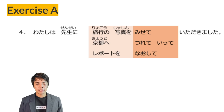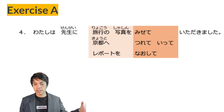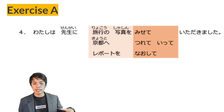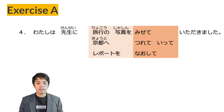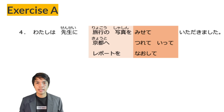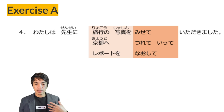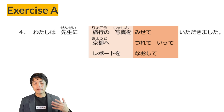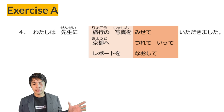Number 3: Watashi wa mago ni okashi wo yarimashita — I gave sweets to my grandson. Watashi wa ki ni mizu wo yarimashita — I gave water to the tree. Because you are giving water to a tree, you use yarimashita instead of agimashita. Watashi wa neko ni esa wo yarimashita — I gave food to my cat. Next: Watashi wa sensei ni ryokou no shashin wo mishite itadakimashita — I received the favor of being shown travel photos from my sensei.